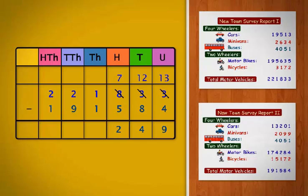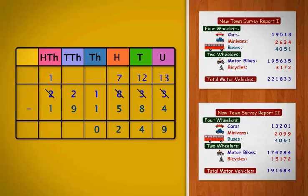Subtracting the thousands, that is 1 minus 1, we get 0. Next, we must subtract the ten-thousands. Since 2 is less than 9, we need to borrow from the hundred-thousands. Borrowing 100,000 leaves 1 in the hundred-thousands. The borrowed 100,000 gets regrouped to 10 ten-thousands.